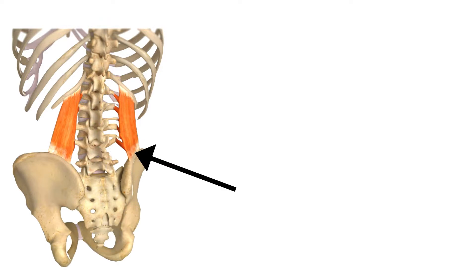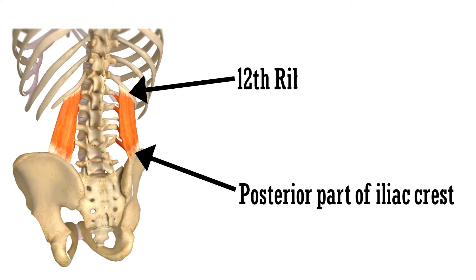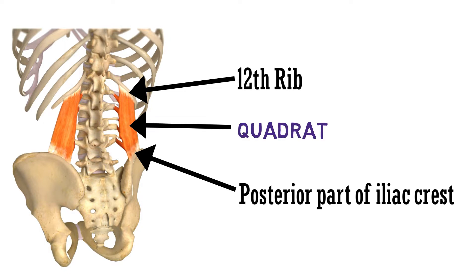So this is the point of origin — the posterior part of the iliac crest — and this is the point of insertion to the twelfth rib. This muscle is Quadratus Lumborum.